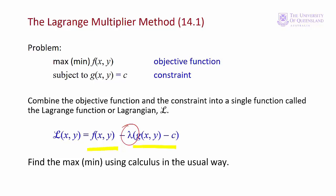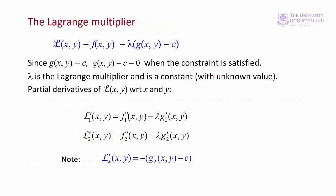Let's have a closer look at the Lagrangian. The first term is the objective function — that's fairly straightforward. The second term is made up of the constraint: we take the constraint and rewrite it as g(x,y) minus c equals zero, then multiply the left hand side by lambda and subtract it from the objective function. In some textbooks the second term is added rather than subtracted, with the constraint written as c minus g(x,y). We'll stick to this method. Since g(x,y) minus c equals zero, the objective function is also satisfied when the Lagrangian is satisfied.